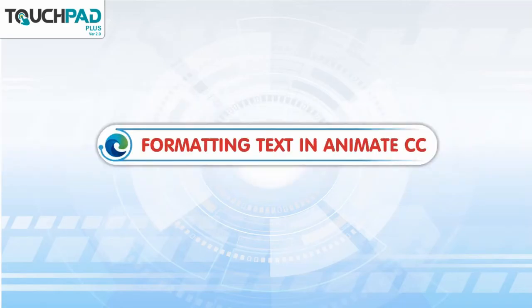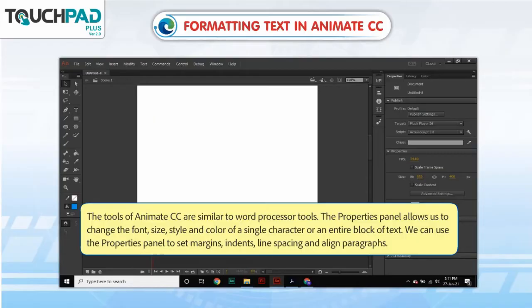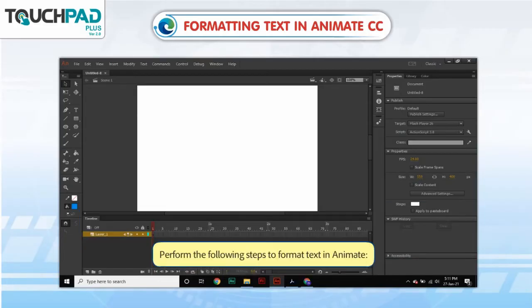Formatting text in Animate CC. The tools of Animate CC are similar to word processor tools. The Properties panel allows us to change the font, size, style and color of a single character or an entire block of text. We can use the Properties panel to set margins, indents, line spacing and align paragraphs. Perform the following steps to format text in Animate.